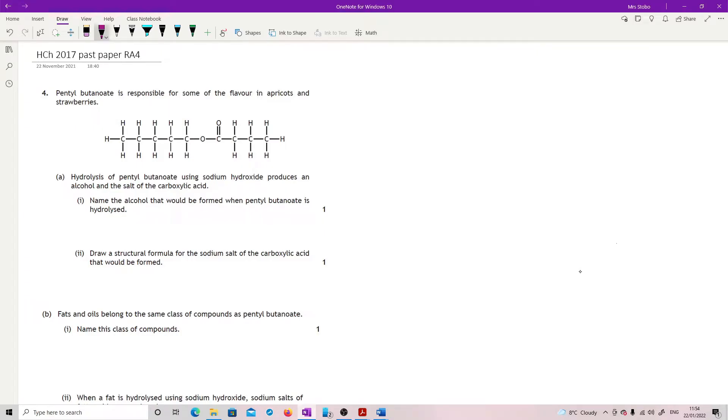Question four. Pentyl butanoate is responsible for some of the flavour in apricots and strawberries. Hydrolysis of pentyl butanoate using sodium hydroxide produces an alcohol and the salt of the carboxylic acid. Name the alcohol that will be formed when pentyl butanoate is hydrolyzed.